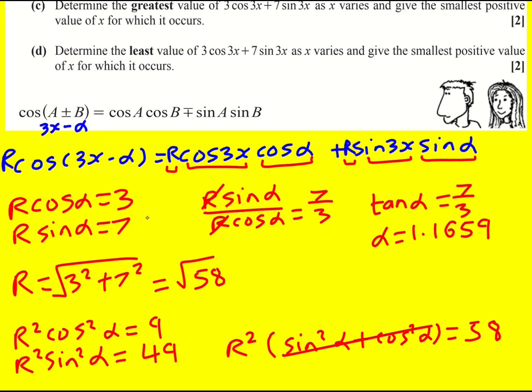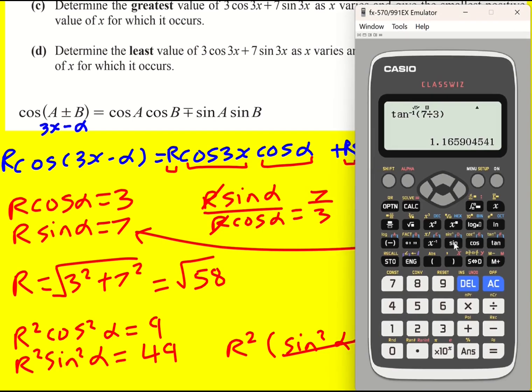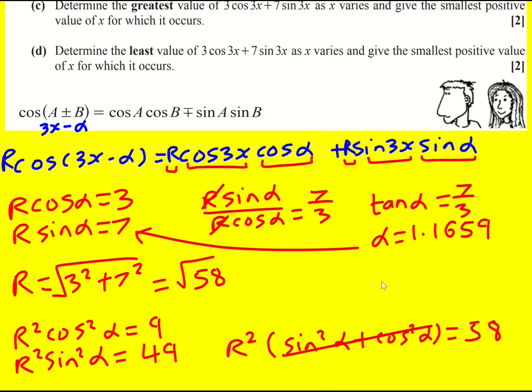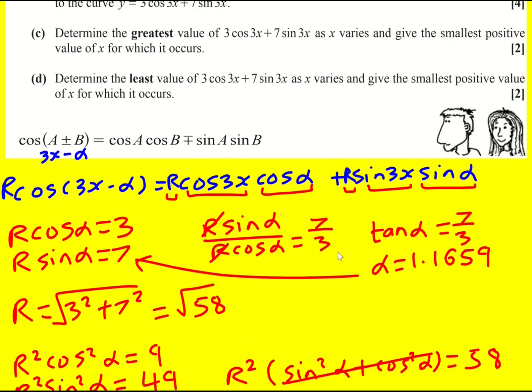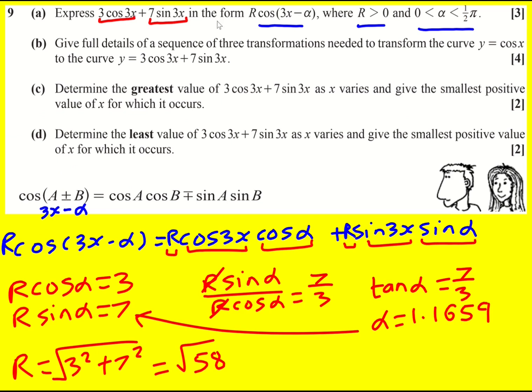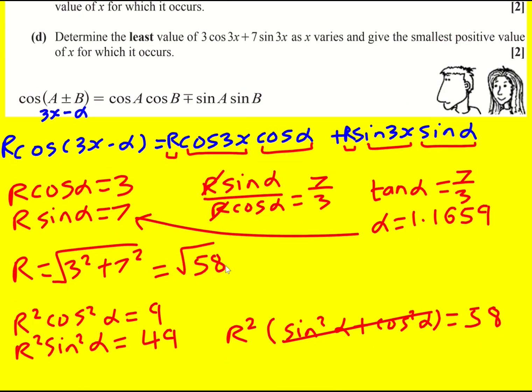Sometimes people like to kind of substitute the alpha back in. So you could work out sine of 1.1659. Let me give that a go. But then we seem to lose the exact value. 7 over that gives 7.615, and you wouldn't see that that is actually root 58 because you kind of lose it. So my strong advice would be don't do that. It doesn't say to leave it exact, but sometimes it might. So I would say go with this method instead.